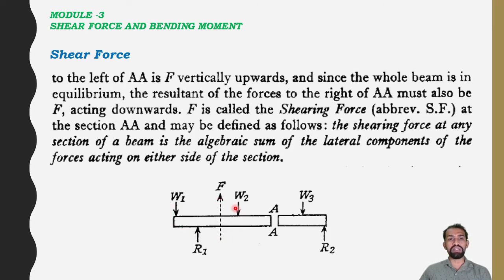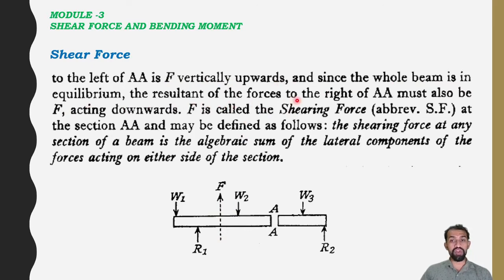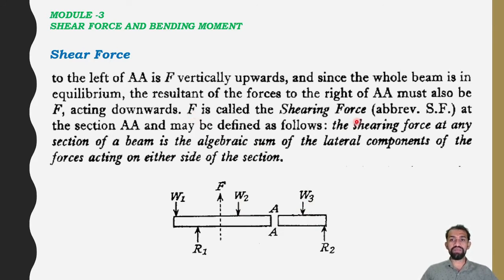When considering the left part, the resultant force F is upwards. W1 and W2 act downwards while R1 acts upwards. Since R1 is greater than W1 and W2 combined, F acts in the upward direction. Since the whole beam is in equilibrium, the resultant force to the right of AA must also be F but acting downward. F is called the shearing force, abbreviated as SF.